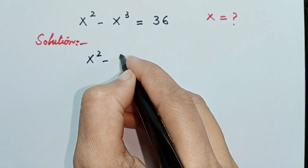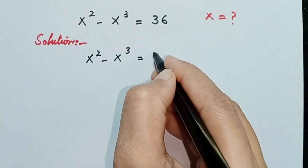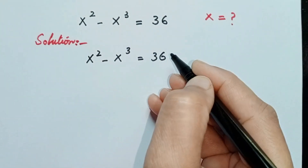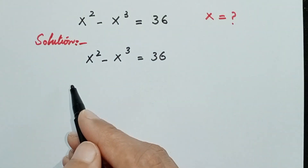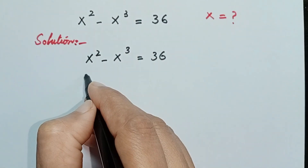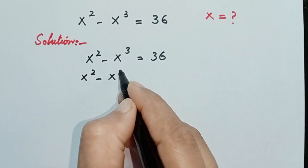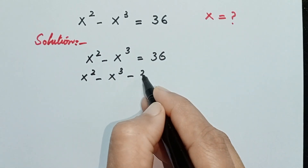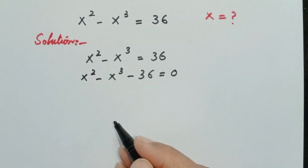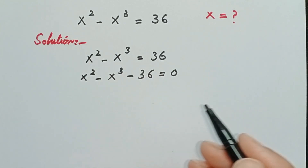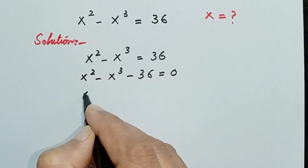So x squared minus x cubed is equal to 36. In the next step, I will bring 36 to the left-hand side, so I will write x squared minus x cubed minus 36 is equal to 0.